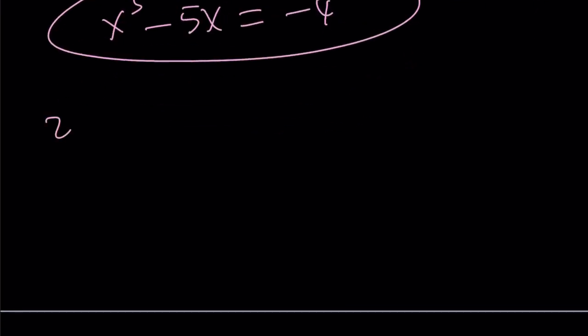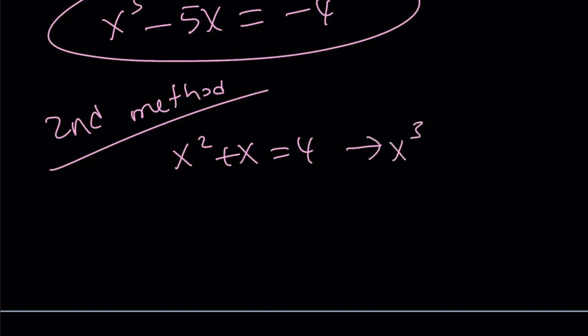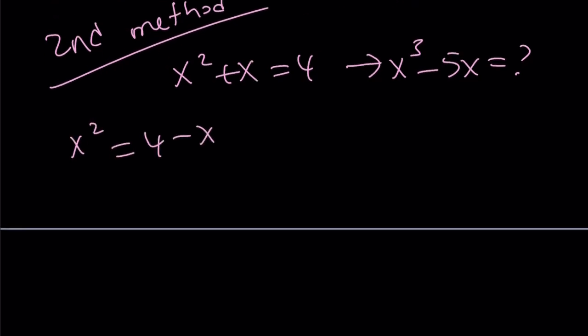That brings us to the end of the first method and the beginning of the second method. Here's the second method. We are given this and we're supposed to evaluate this expression. I'm going to isolate x squared, write it as 4 minus x.